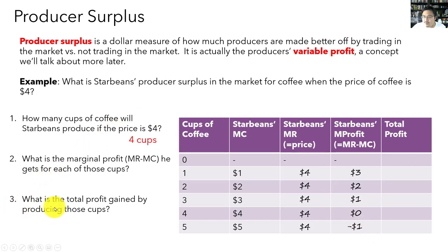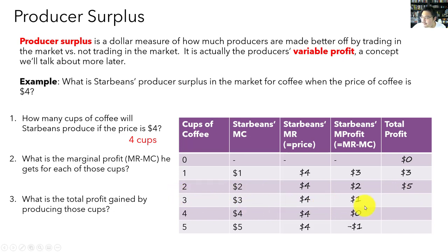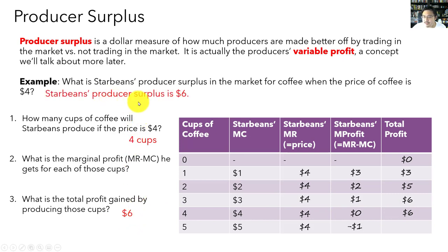For question three: total profit is found by adding up marginal profits. At zero cups, total profit is $0. One cup: +$3 = $3. Second cup: +$2 = $5. Third cup: +$1 = $6. Fourth cup: +$0 = $6. So the total profit Star Beans gains by producing four cups is $6. Star Beans' producer surplus for participating in the market when the price is $4 is equal to $6.